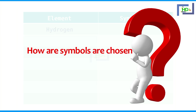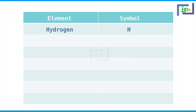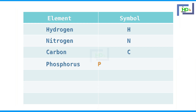How are symbols chosen? For some elements, the first letter of the name of the element is taken. For example, for hydrogen the symbol is H — this is the first letter of hydrogen. The symbol of nitrogen is N. For carbon, the first letter C. Phosphorus, P. Oxygen, O. Sulphur, S. Fluorine, F.